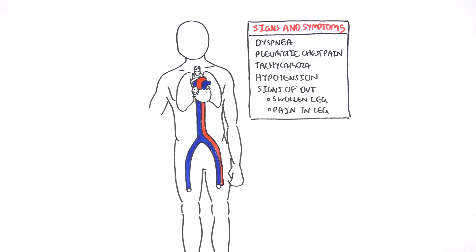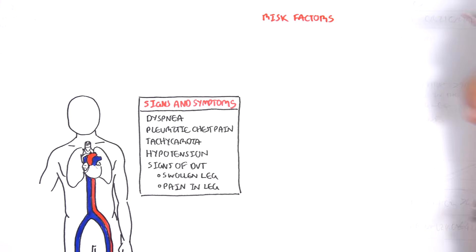Deep vein thrombosis is very important because it's one of the causes of pulmonary embolism. About 90 to 95% of pulmonary emboli result from thrombosis that occurs in the deep veins.